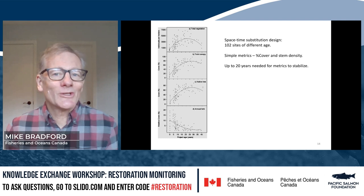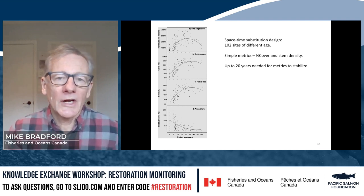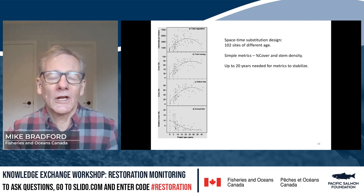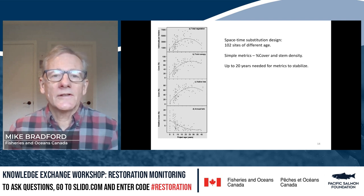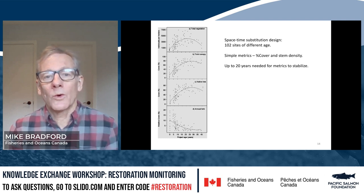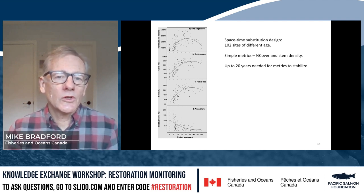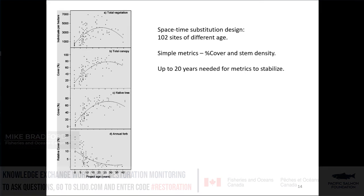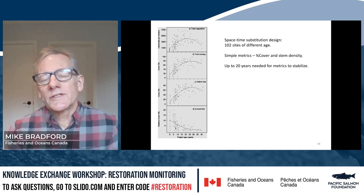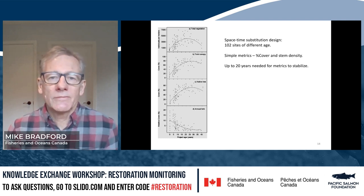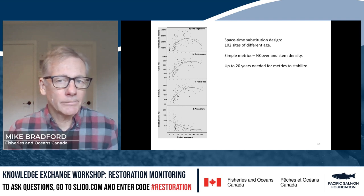With 102 sites assessed, varying in age from zero to about 40 years, the data show a pretty clear trend. It takes a couple of decades for many metrics to reach their maximum values, implying you need to monitor this kind of work for quite a long time. But importantly, simple metrics — cover and stem density — proved useful, were relatively easy to collect, and allow for revisiting over a long period of time if needed.